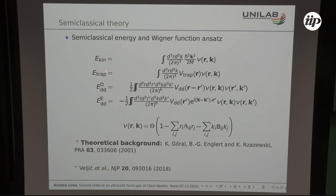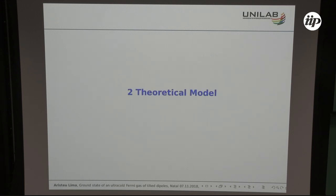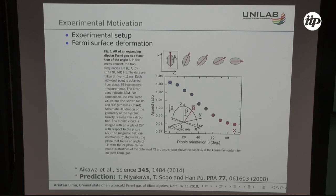Well, interested in that problem, we were looking at Fermi gases from a semi-classical point of view. This is just the kinetic trap and dipole-dipole direct and exchange terms. The direct term is the one responsible for the deformation in real space, the cloud deformation, and the exchange term is the one responsible for the K-space deformation.